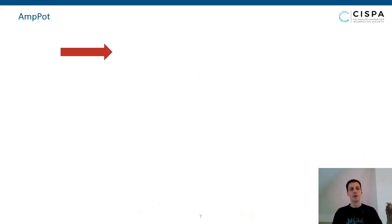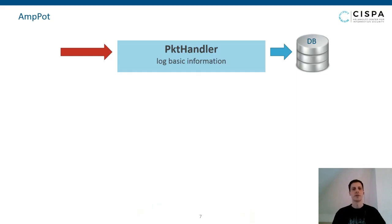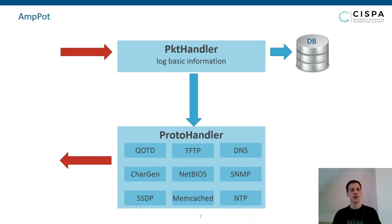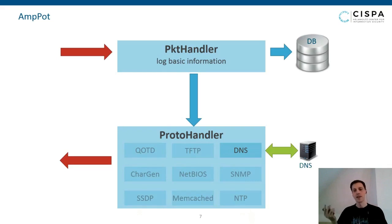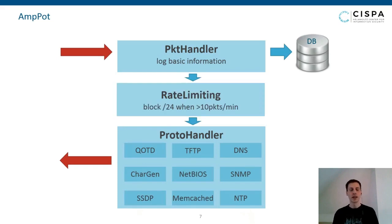The honeypot, which we call Ampot, is a very simple honeypot. Whenever it receives a request, a packet tamper records basic information into a database — including what IP the packet comes from, which port it's sent to, and the current time. We have a bunch of protocol handlers that generate a convincing enough response so that a scanner looking for amplifiers will accept us as a potential amplifier. We also have very strict rate limiting: as soon as we've sent 10 packets per minute to a /24 network, we stop replying.